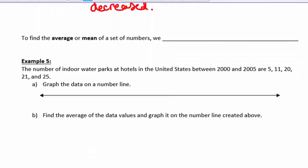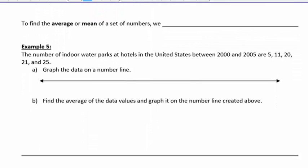The next topic. To find the average or mean of a set of numbers, those two words mean the same thing. We want to add all the numbers up and divide by the number of numbers.